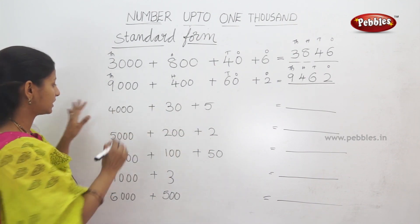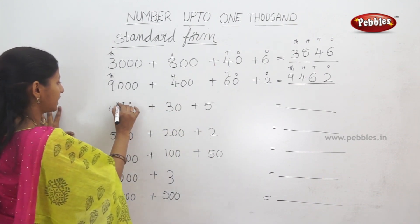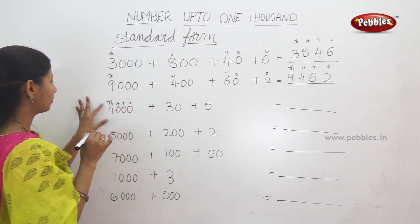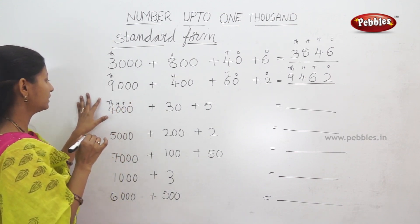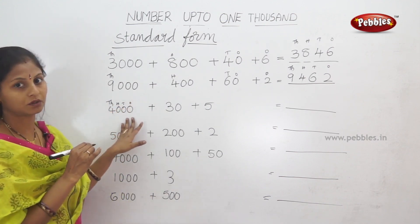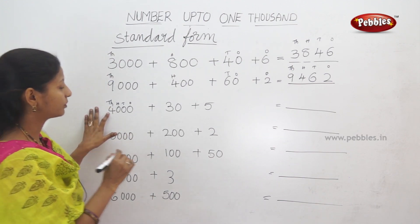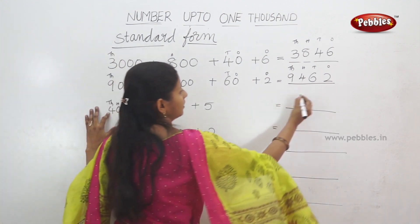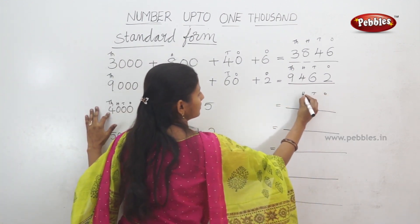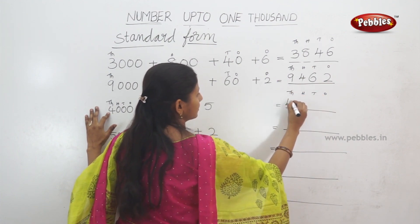So, 1000s position: 4000, 4 into 1000. 4000. So, 1000 position is 4. Then, 10s, 100s, 1000s.